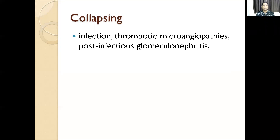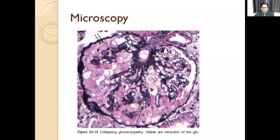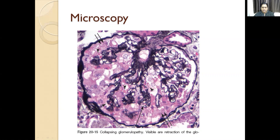The pathogenesis of collapsing nephropathy is usually unclear. Collapsing nephropathy can happen not only with HIV but with other infections, though HIV is the classical example. Here we can see collapsing glomerulopathy — the retracted glomerulopathy — and these are the inclusions seen here, the classical example usually seen in HIV patients.